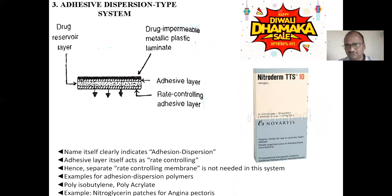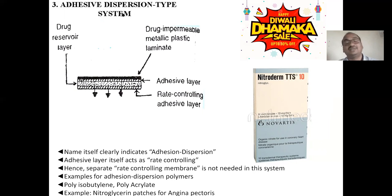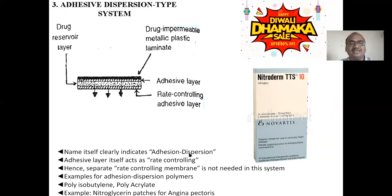The third formulation system is the adhesive dispersion layer system. The name clearly indicates that the rate-controlling polymer also has adhesion character — one layer acts as both the adhesion layer and the rate-controlling membrane. One layer does double duty. Example polymer: polyisobutyl polyacrylate — if you use this type of polymer, one layer is enough. Example product: Nitroderm TTS (transdermal therapeutic system).